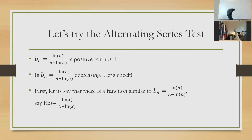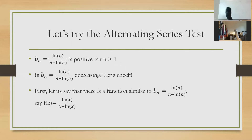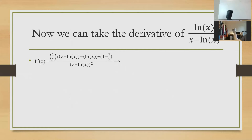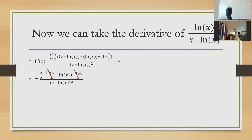Is it decreasing? We're going to have to check for that. Let's say there's a function f of x equal to natural log of x over x minus natural log of x. We can take the derivative: we get 1 over x times (x minus natural log of x) minus natural log of x times (1 minus 1 over x), all over (x minus natural log of x) squared. This simplifies to 1 minus natural log of x over (x minus natural log of x) squared.